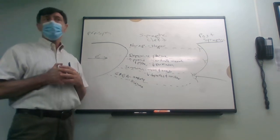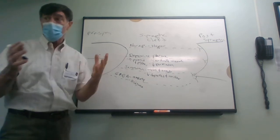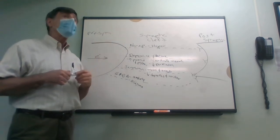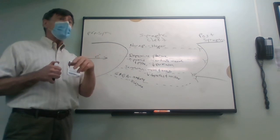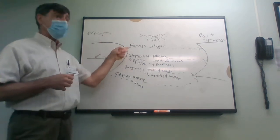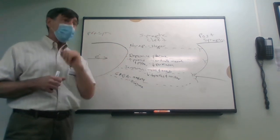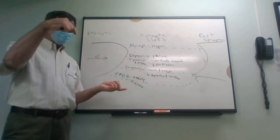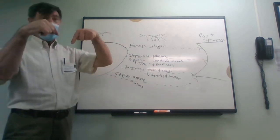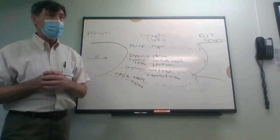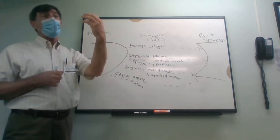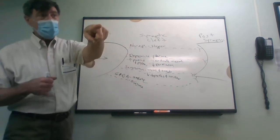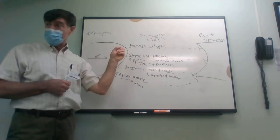A seizure is too much electrical activity going on in the brain. What drug might cause seizures? A stimulant. Alcohol in withdrawal — because cocaine elevates excitatory neurotransmitters — and withdrawal from alcohol is similar to the influence of cocaine. When you're in withdrawal from alcohol or under the influence of cocaine, you have too many excitatory neurotransmitters.